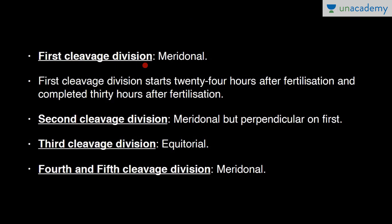The first cleavage division is meridional, starting 24 hours after fertilization and completed at 30 hours. The second cleavage division is also meridional but perpendicular to the first, giving rise to a three-cell transitory stage before the four-cell embryo forms — so in humans we have a three-cell transitory stage. The third cleavage division is equatorial (horizontal), and the fourth and fifth are again meridional.